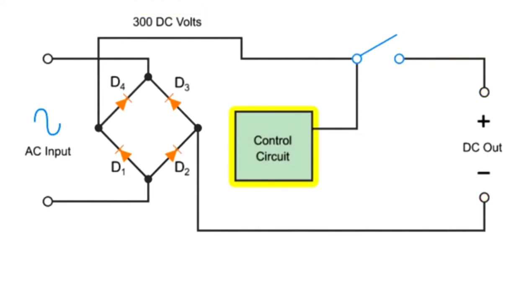A control circuit operating a DC switch turns the DC output on and off. This controller device can be an SCR or a powerful transistor.